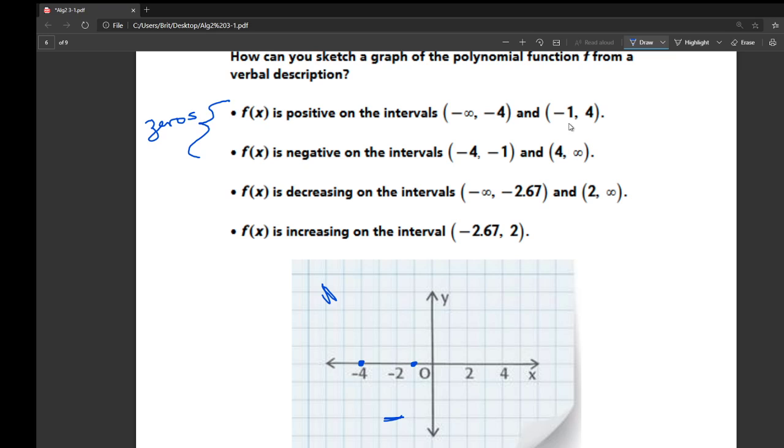It's positive again from negative 1 to 4. So it'll be negative again from 4 to negative infinity. So it's going to go down like that somehow. So there's the beginning part of our graph.